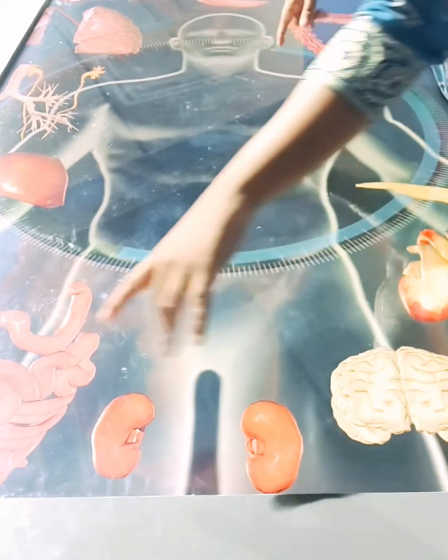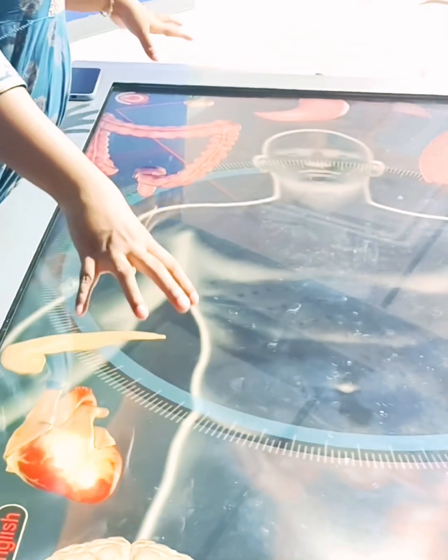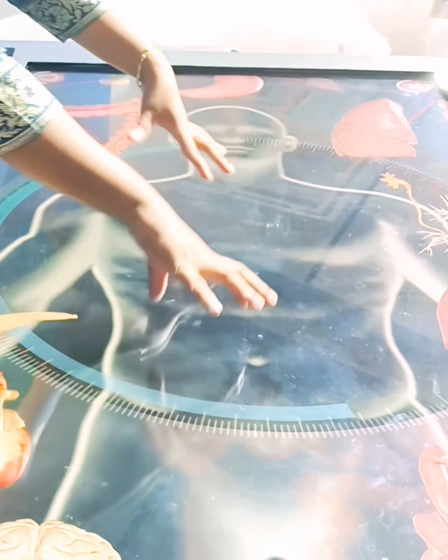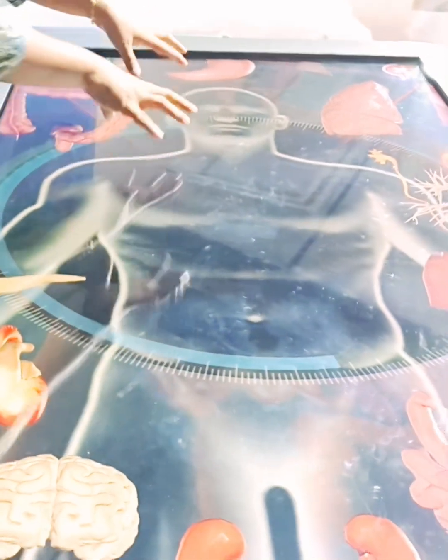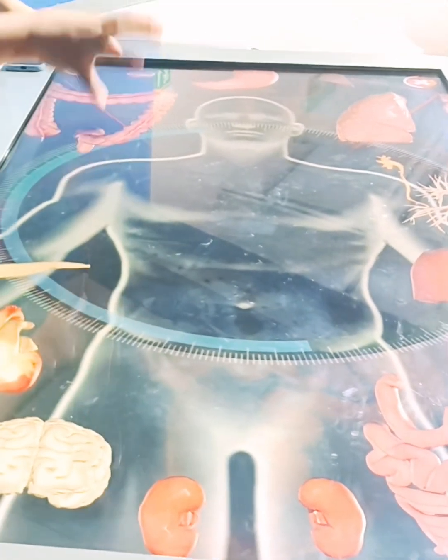So this is just an outline of a human body, a human body image, and the organs are scattered around. These are all the internal organs of a human body. So I will just arrange accordingly so you'll have an idea where each organ is located.